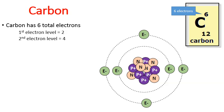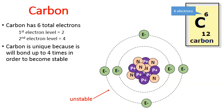So right now you might recognize that carbon is an unstable atom, and as a result it will form covalent bonds with up to four other atoms. Carbon is unique because it will bond up to four times in order to become stable. That's one of its unique characteristics.